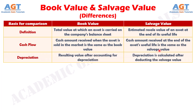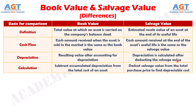Number three: the book value is the resulting value that is arrived at after accounting for the depreciation, whereas the total depreciation is calculated only after deducting the actual salvage value. Number four: the book value is calculated by subtracting the accumulated depreciation from the total cost of an asset, whereas the salvage value is deducted from the total purchase price to help arrive at the depreciable cost.